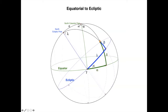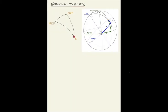The triangle we draw goes from the star to the north celestial pole to the north ecliptic pole. Let's draw the elements of this triangle and work out the trigonometry. We have the star here, the north celestial pole here, and the north ecliptic pole here.